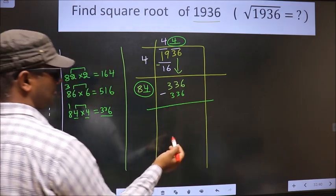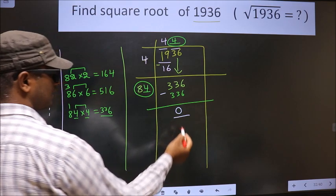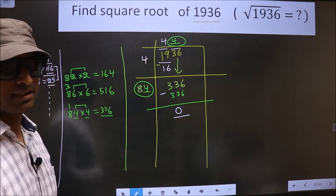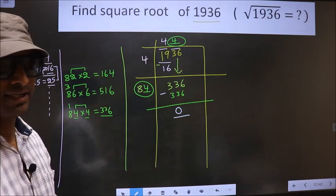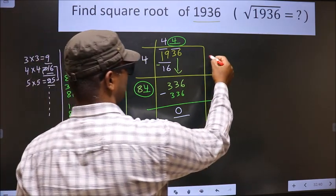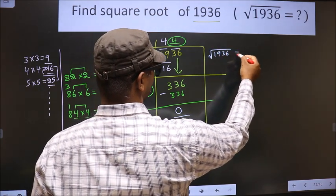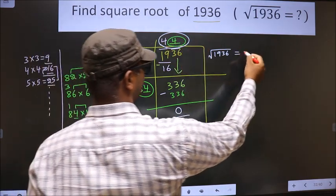Now you subtract. 336 minus 336 will result in 0. So now we got 0 here. That means given number is a perfect square. And the square root of 1936 is this number that is 44.